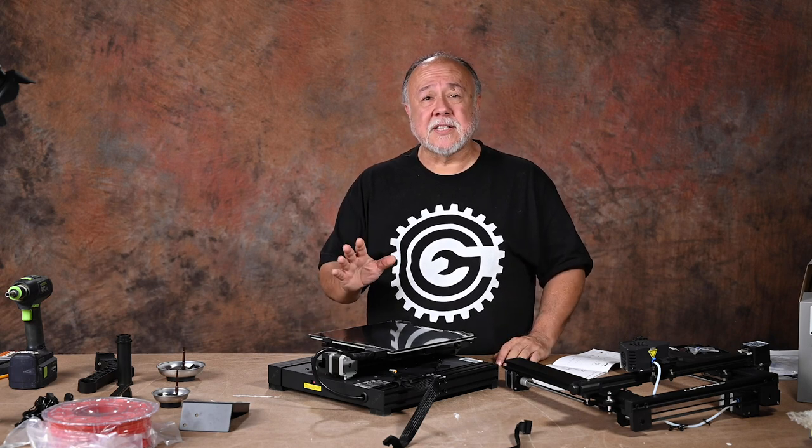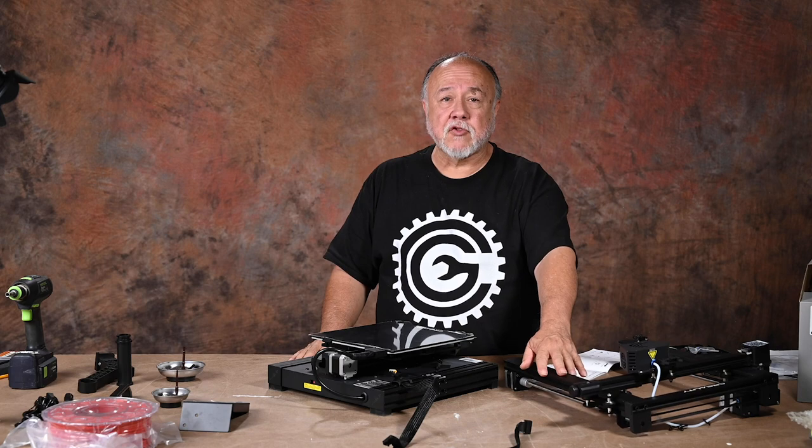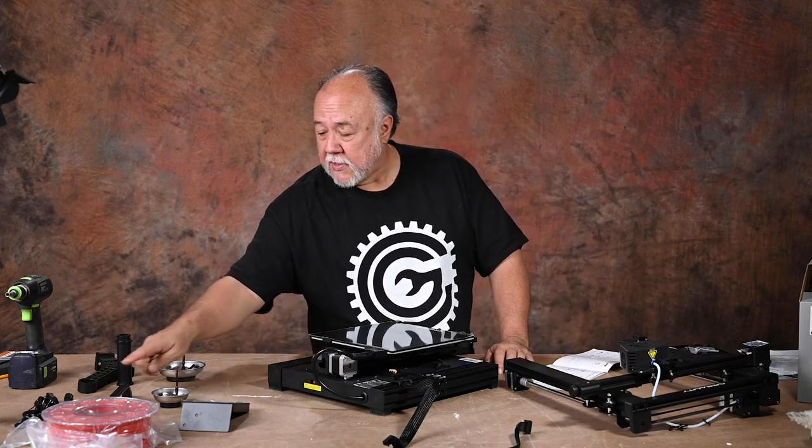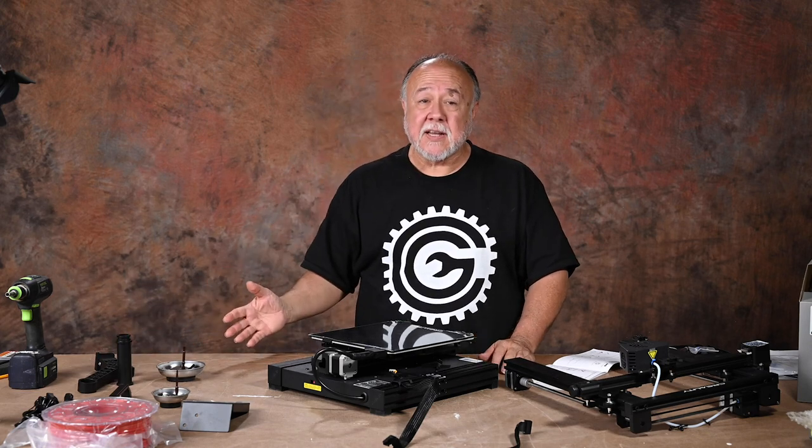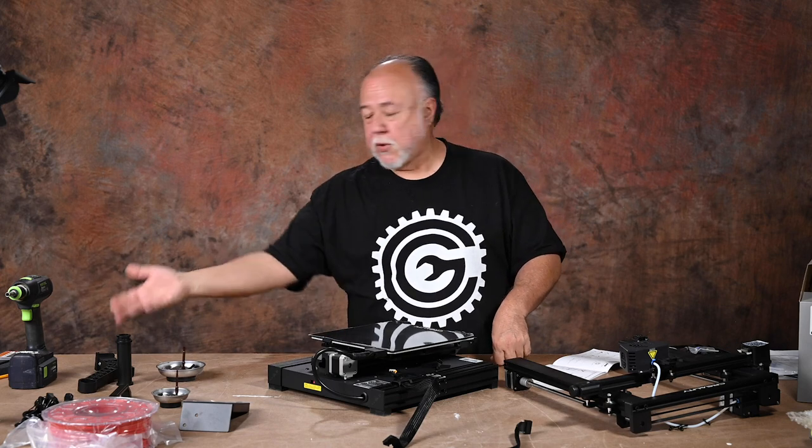Now, there isn't a lot to do here, it appears, because there's very few parts. There's the gantry, there's the base plate, the control panel, the handle, and the spool holder. And that's it. One, two, three, four, five, or six pieces that need to be put together. It seems pretty straightforward.